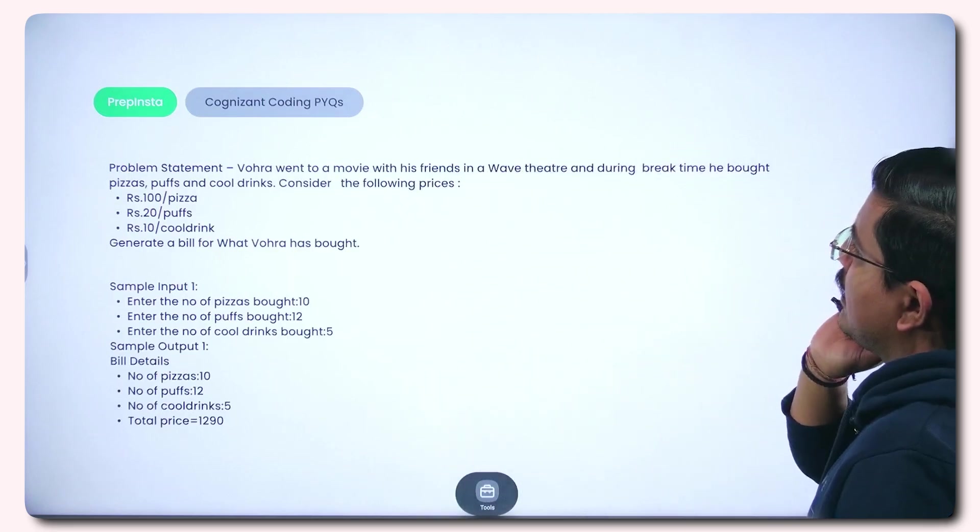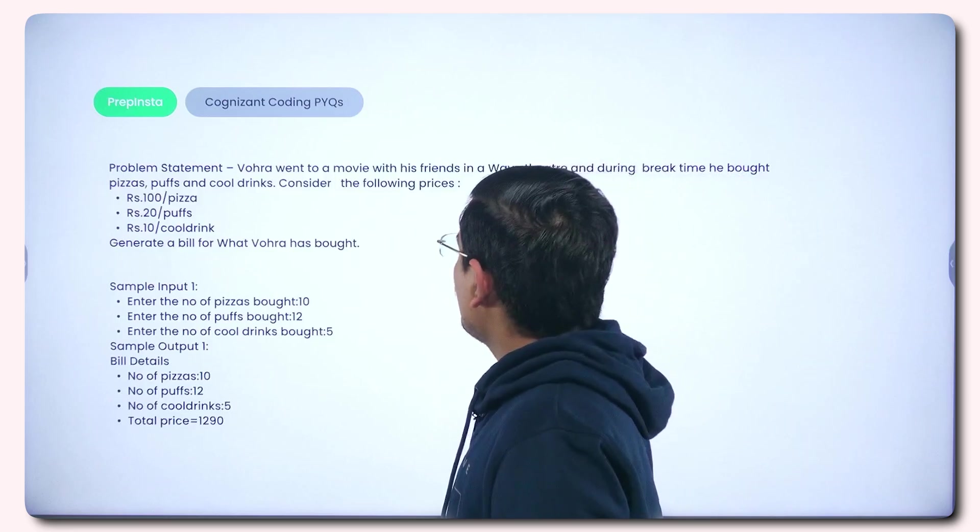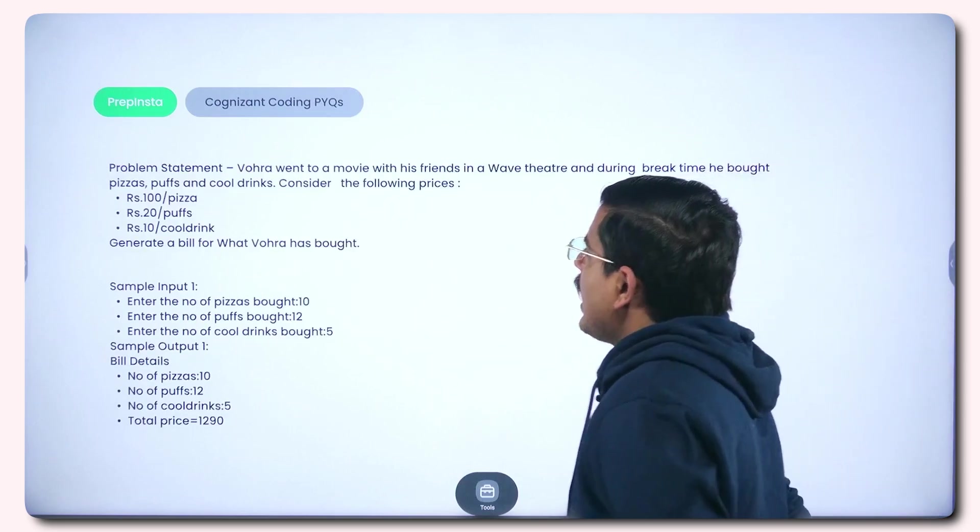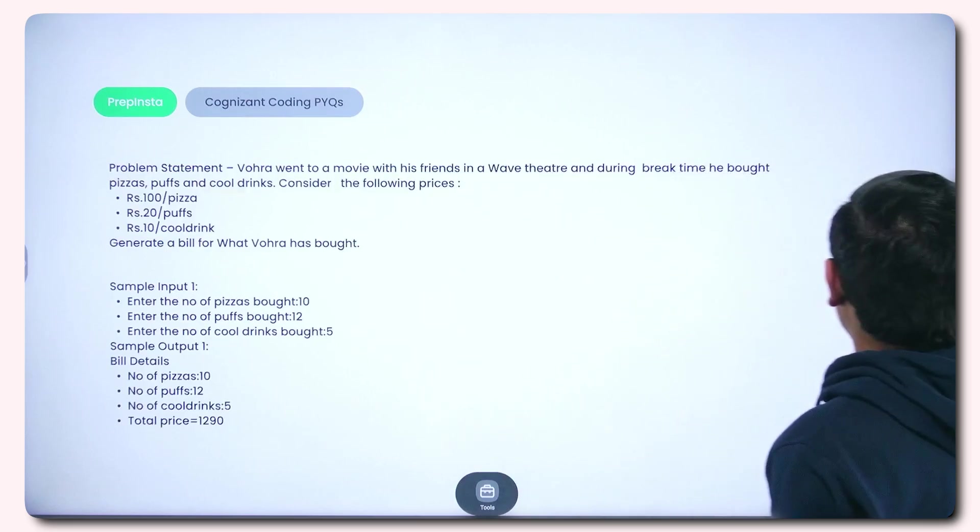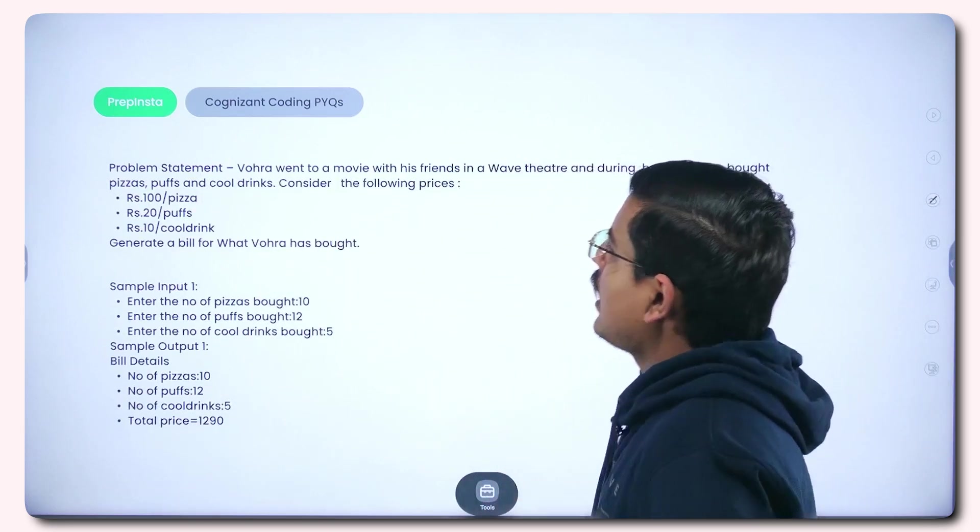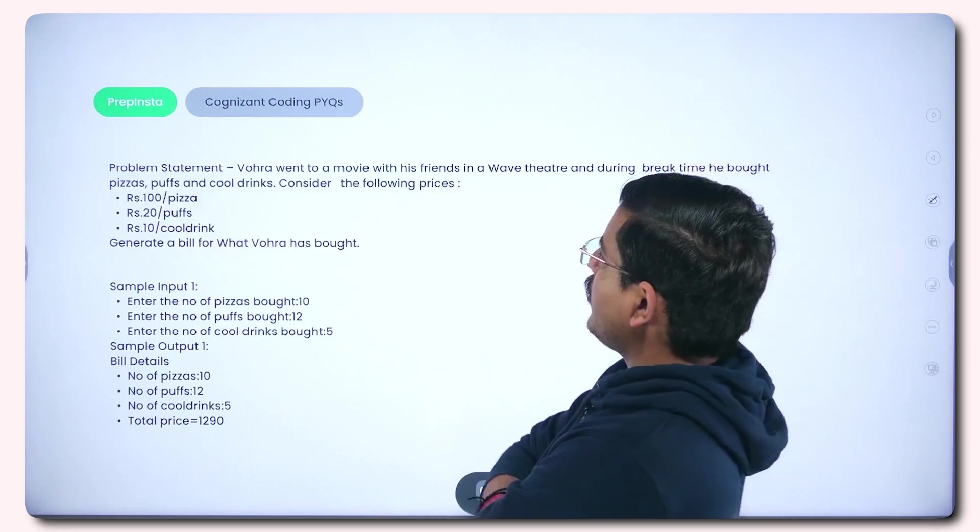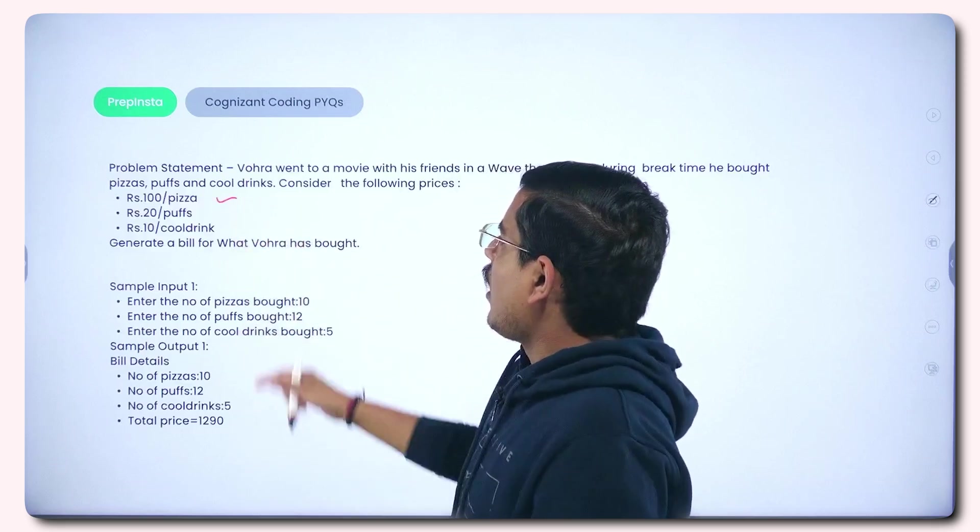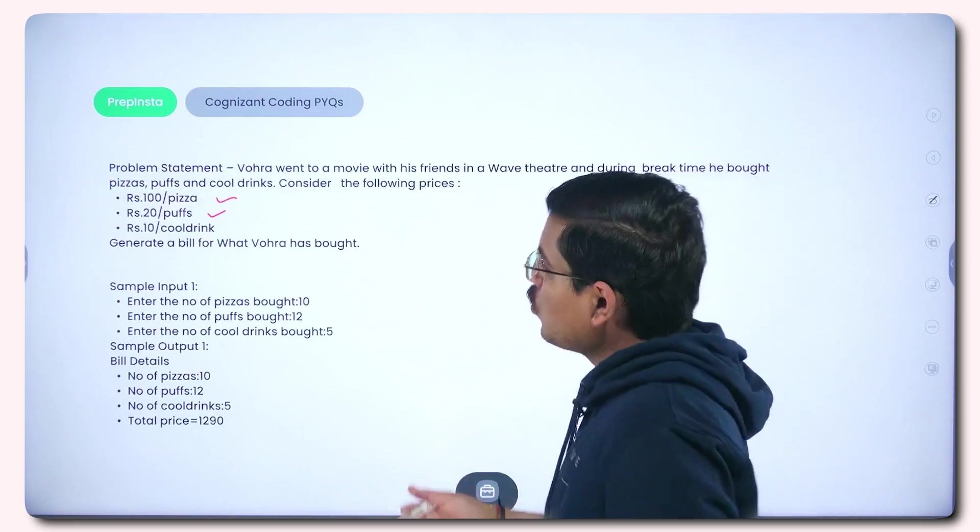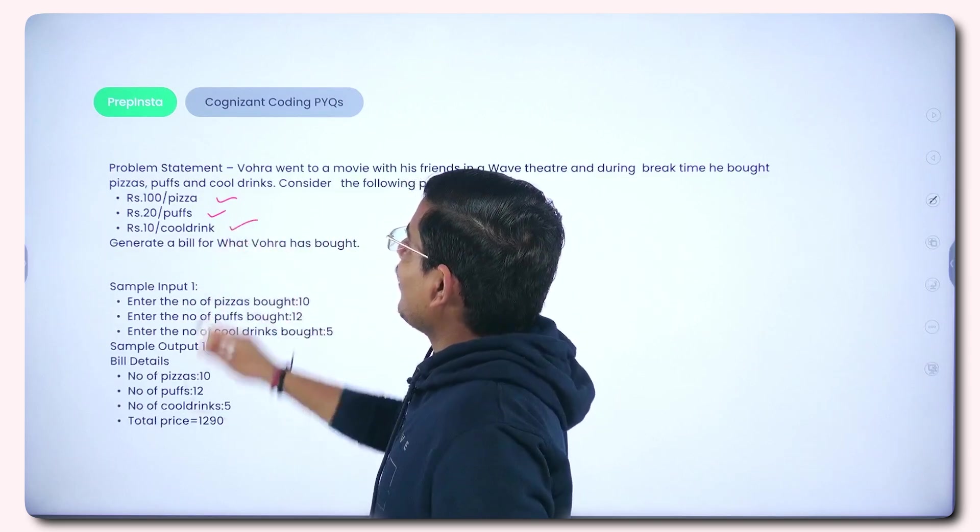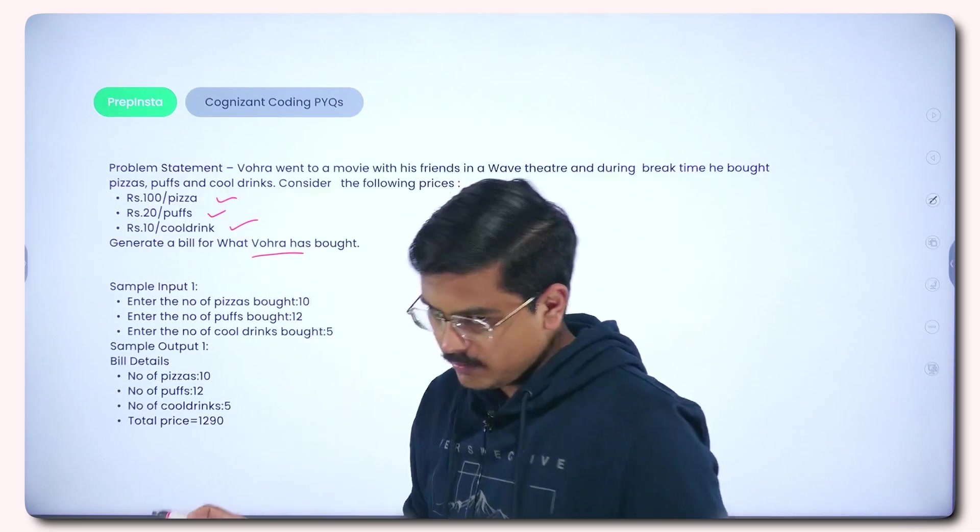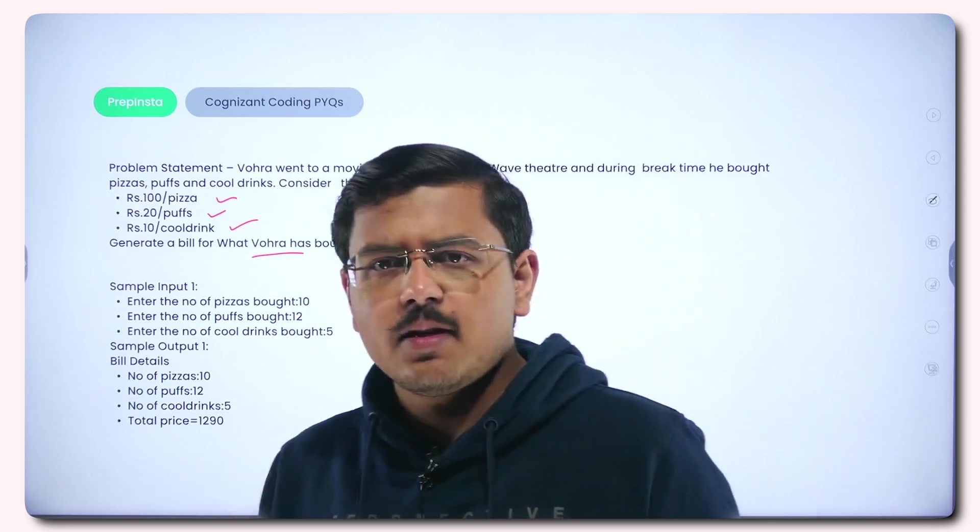Let's go ahead and understand what was the problem statement. There is a person, Bohra, who went to a movie with his friends in a Wave theater. During break time, he bought pizzas, puffs, and cool drinks. 100 rupees per pizza, this is the cost of one pizza. 20 rupees per puff, so each puff costs 20 rupees. And each cool drink is of 10 rupees. Now in this case, you have to generate a bill for what Bohra has bought.